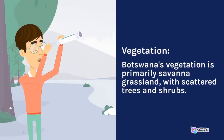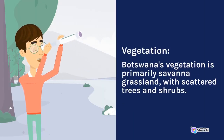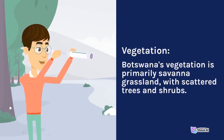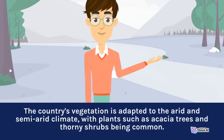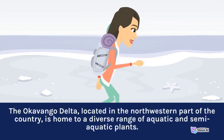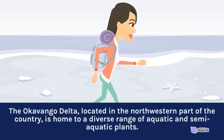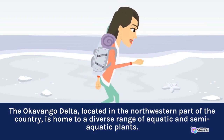Botswana's vegetation is primarily savanna grassland, with scattered trees and shrubs. The country's vegetation is adapted to the arid and semi-arid climate, with plants such as acacia trees and thorny shrubs being common. The Okavango Delta, located in the northwestern part of the country, is home to a diverse range of aquatic and semi-aquatic plants.